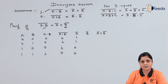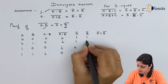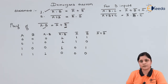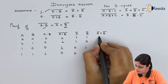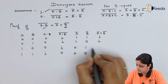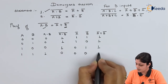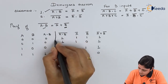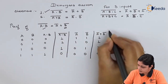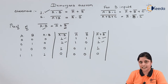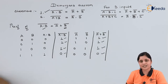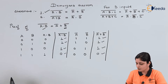Complement of A gives one, one, zero, zero. Complement of B gives one, zero, one, zero. Applying the OR gate: one plus one is one, one plus zero is one, zero plus one is one, and zero plus zero is zero. Comparing both columns, first, second, third, and fourth terms are all the same — the right-hand side equals the left-hand side.